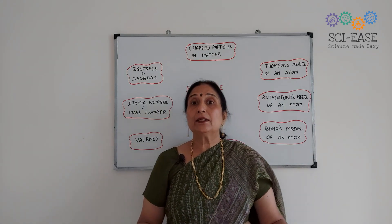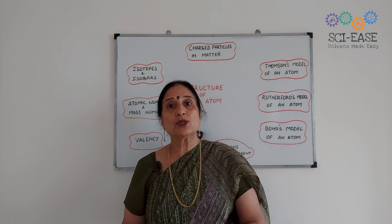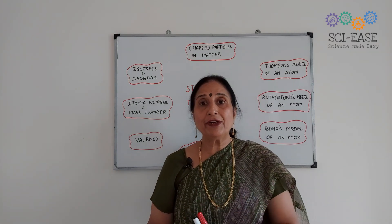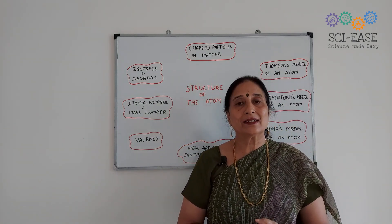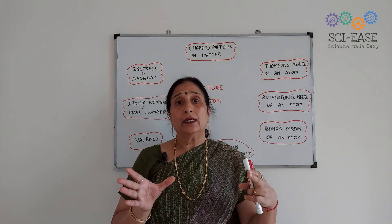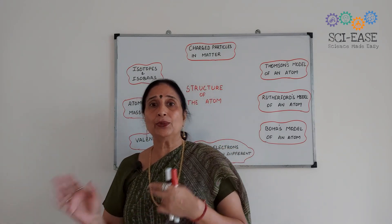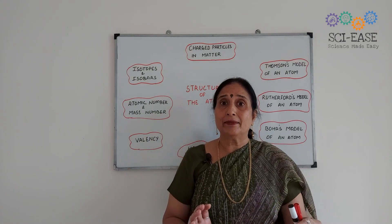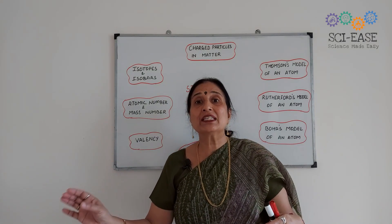We have read in the previous chapters that matter is made up of atoms or molecules, and one matter that is different from another due to the different atoms present in it. Dalton gave his theory — Dalton's atomic theory — and he gave the definition of an atom as the smallest indivisible particle.